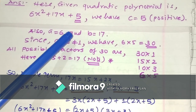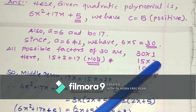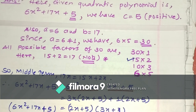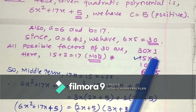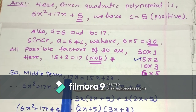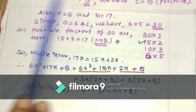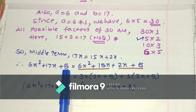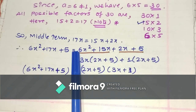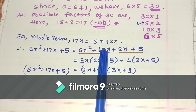Since the product is positive, the sign for both factors will remain positive. The middle term 17x is split using these two factors 15 and 2 as 15x + 2x. So 6x² + 17x + 5 is written as 6x² + 15x + 2x + 5. The first and last terms remain as they are, and the middle term is split. Now I have to take common factors from the first two terms and the last two terms.